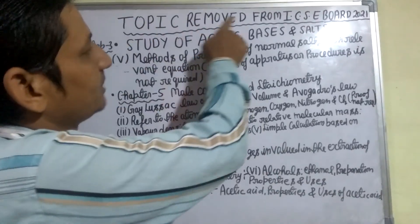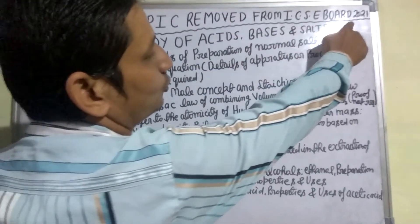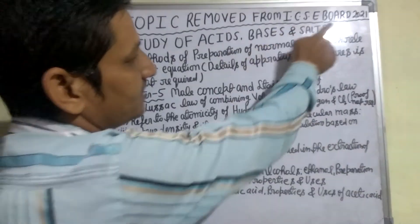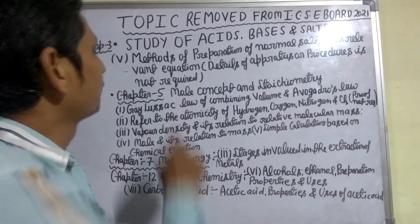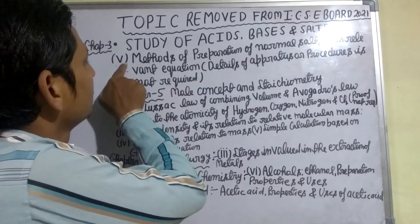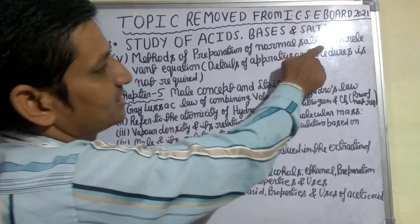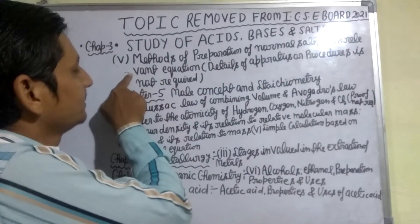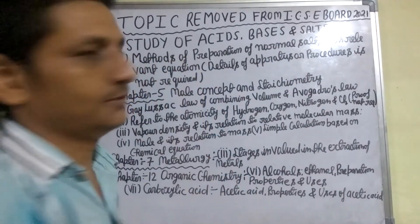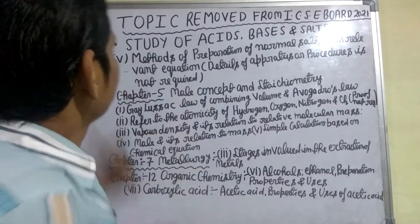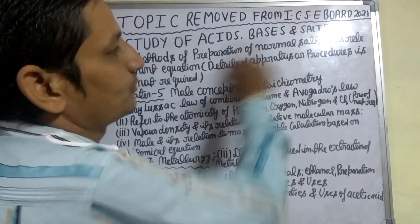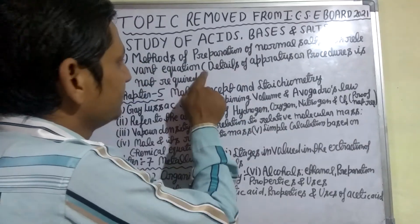So look here — topics removed from ICSC board 2021. Chapter 3: Study of Acids, Bases and Salt. The topic removed from Chapter 3 is the 5th part: methods of preparation of normal salt with relevant equations. Details of apparatus or procedure are not required.